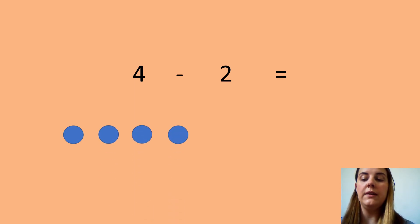Then what do I need to do? Well done, I need to cross out 2: 1, 2. And count how many I have left: 1, 2. So my answer is 2. Fantastic. Write down your number sentence with your answer and on to the next one.